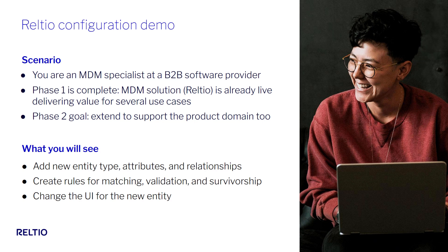In order to meet these objectives, we need to add product as a new entity type into our MDM and connect our customers with the products they've purchased or consumed. Our particular velocity pack does not include product as a predefined entity type, so we'll simply extend our current environment with very little effort. Over the next 10 minutes, you'll see us add a whole new domain complete with attributes, match rules, validation rules, survivorship rules, a relationship to connect to customers, and UI updates.